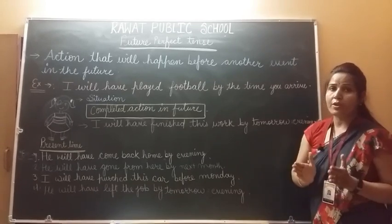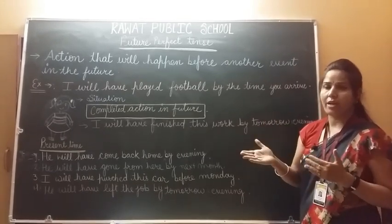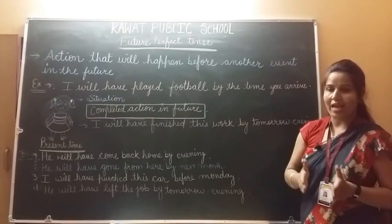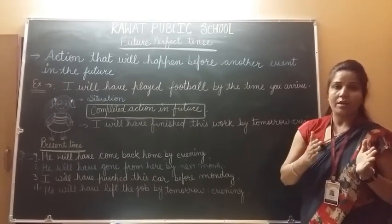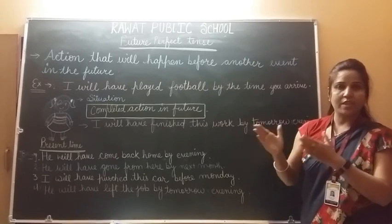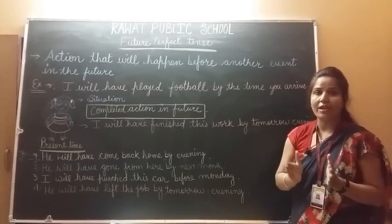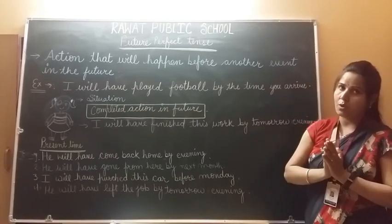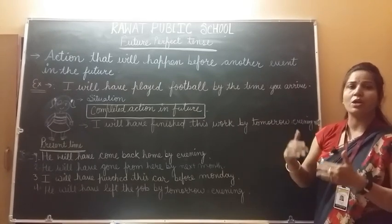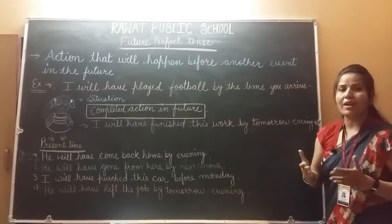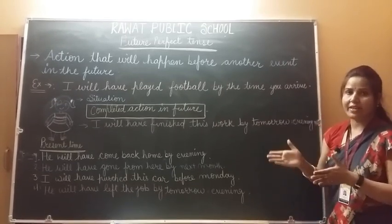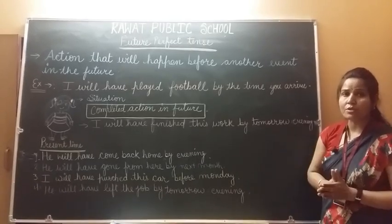For future perfect tense we use 'will' and 'shall.' In spoken English, we use 'will' with both singular subjects — I, he, she, it, or any name — and plural subjects — you, we, they. 'Shall' is mostly seen in books, used with I and we, and has its own rules. I will explain where to use 'shall' separately. But in future perfect tense, with all subjects, we will use 'will.'